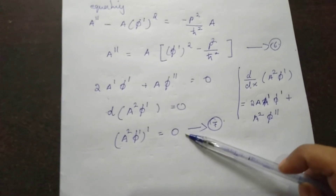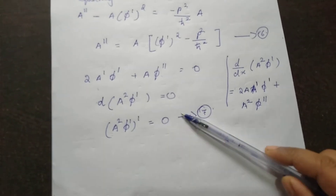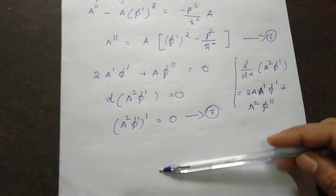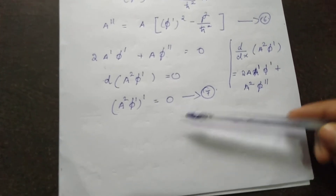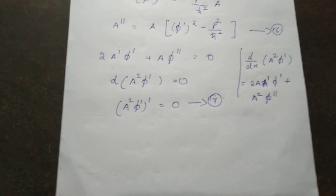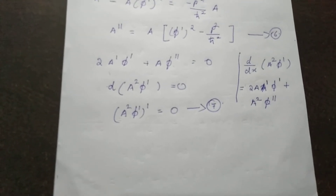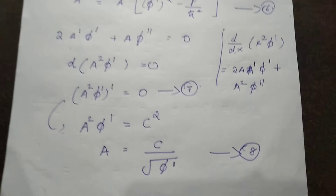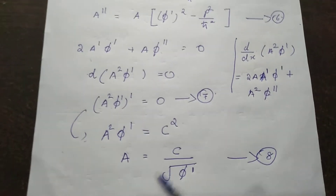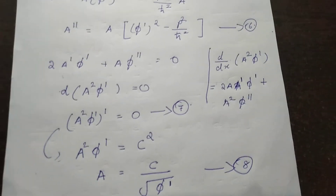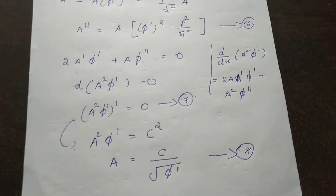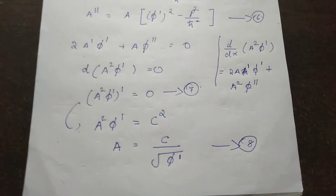Since the derivative of (A squared phi dash) is zero, A squared phi dash equals a constant. From equation number 7, we have A squared phi dash equals a constant, so we get A equals c divided by the square root of phi dash. Put it as equation number 8.